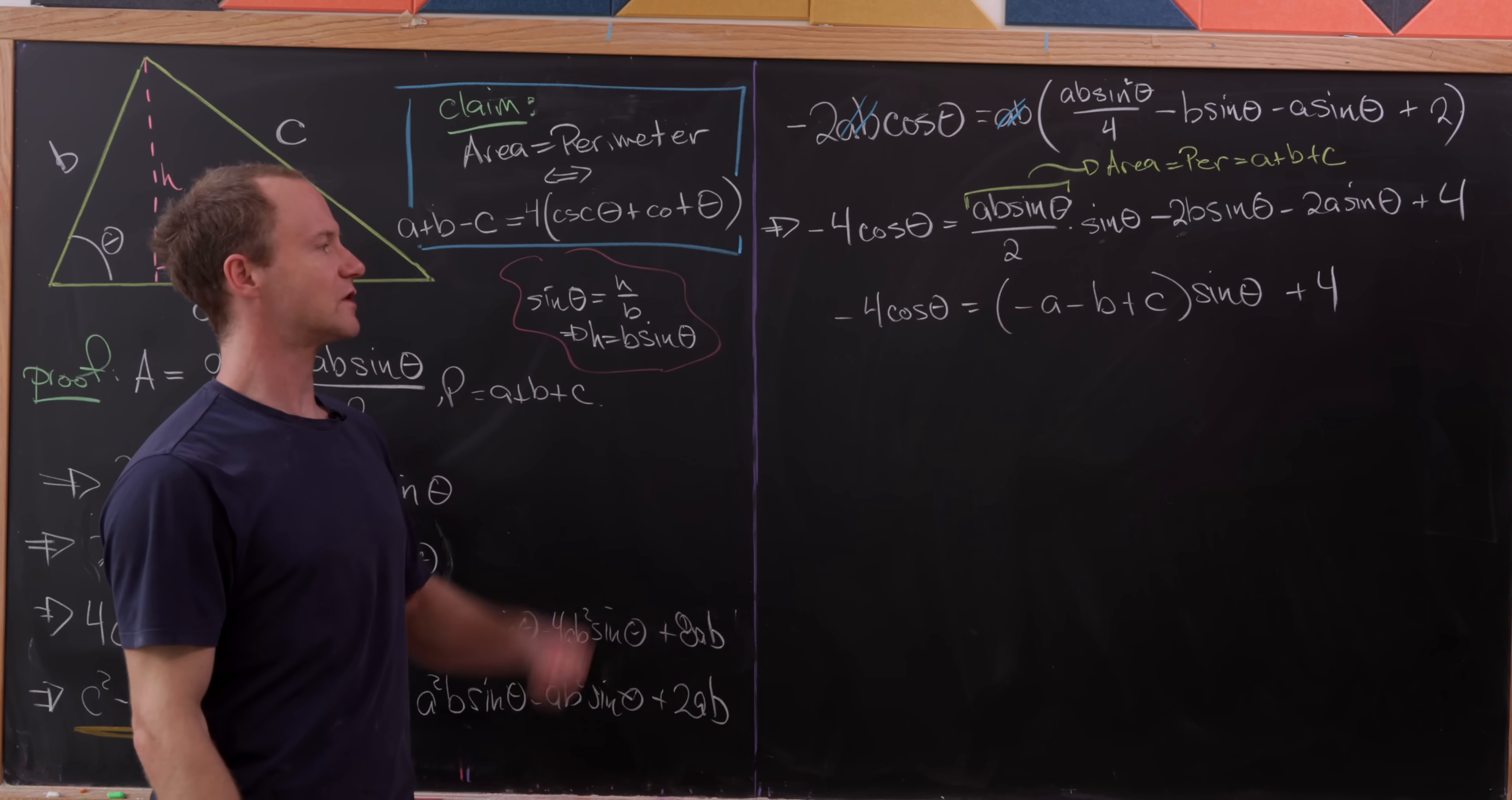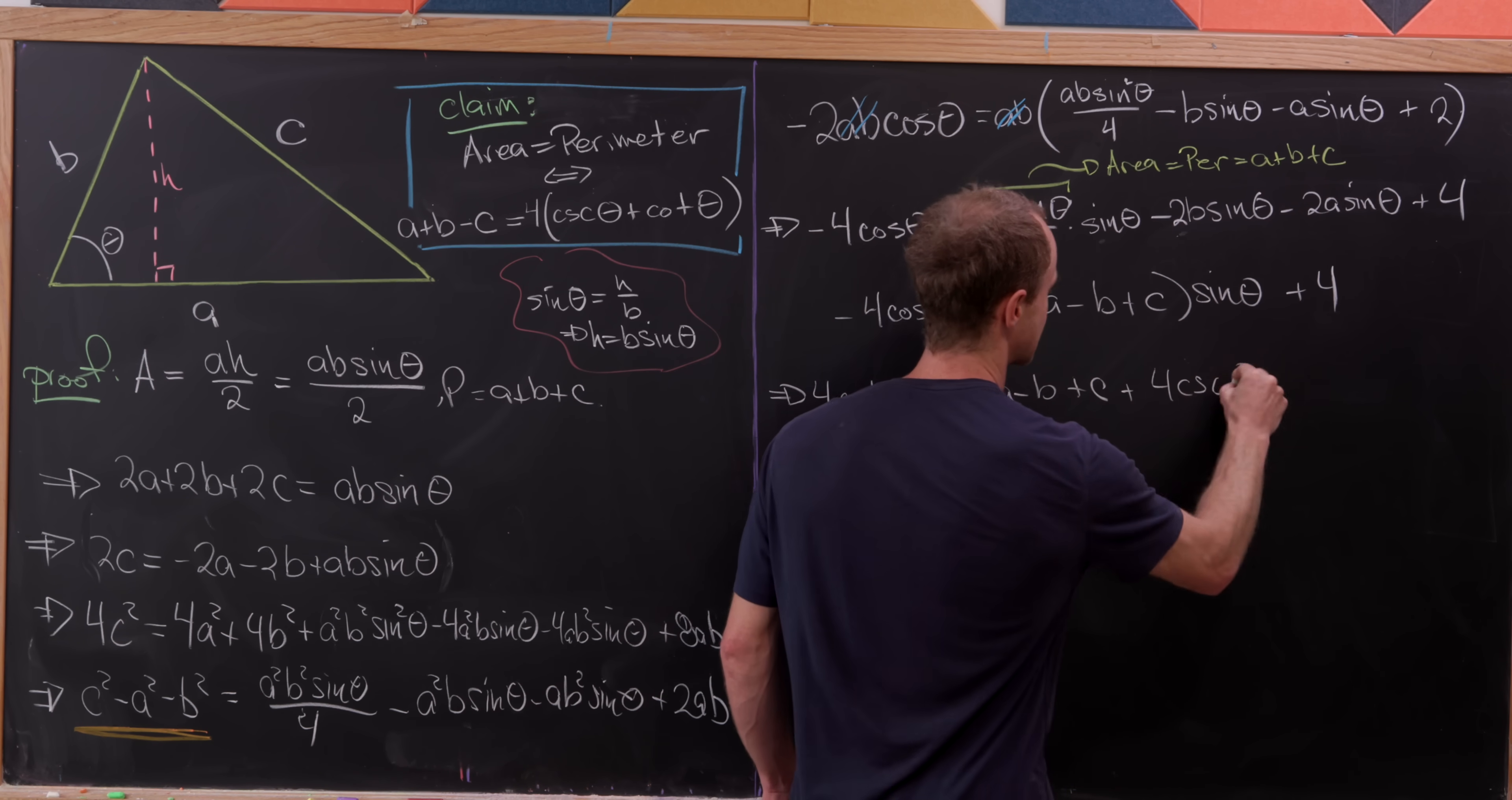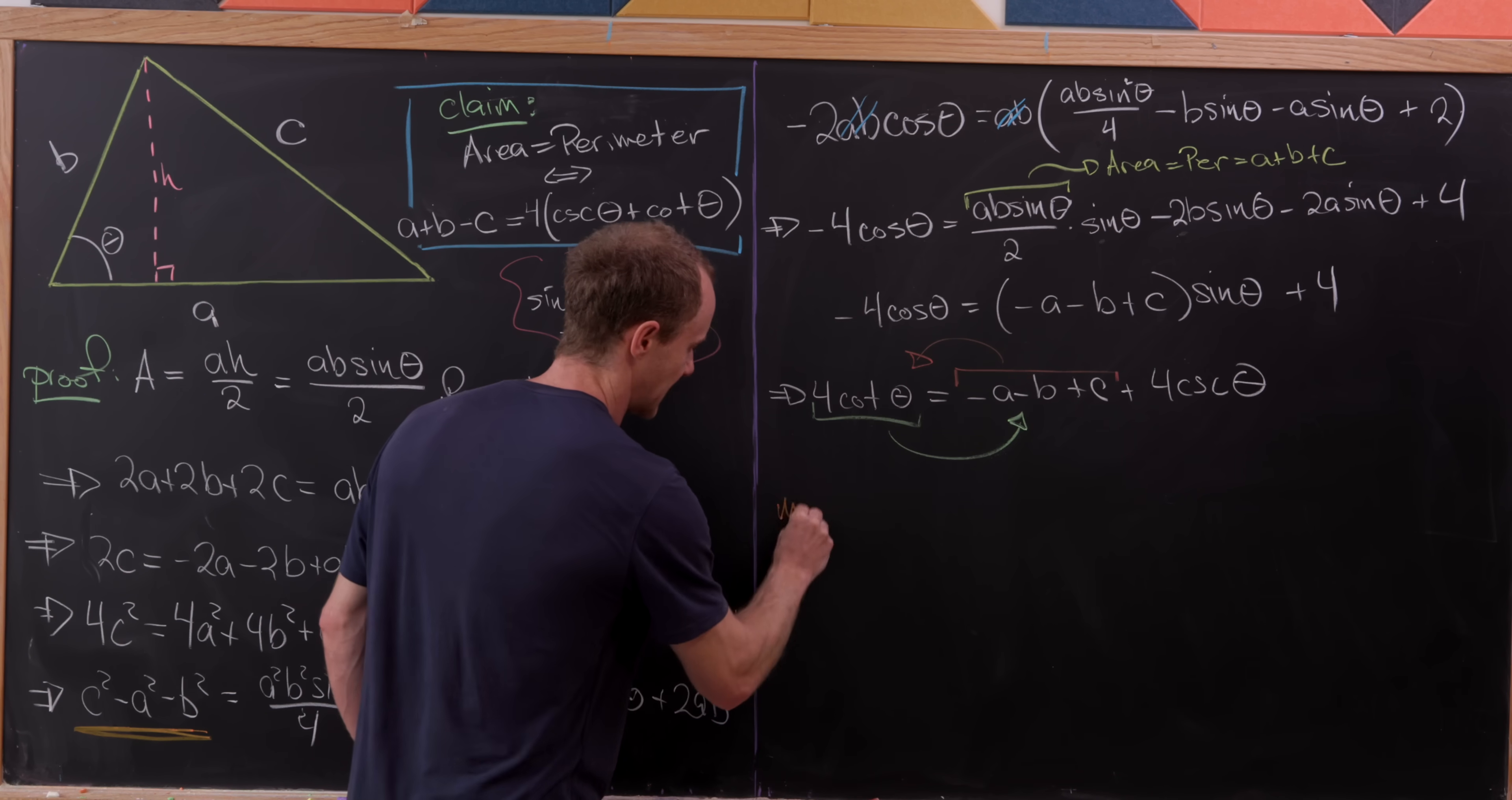But now we're pretty close to our final formula. Let's divide everything by sine, and that's going to give us 4 cotangent theta over here on the left. And then we'll have minus a minus b plus c over here on the right, and then plus 4 cosecant theta. But now we'll do the final step, which will be to take this minus a minus b plus c, move it over to the left-hand side of this equation, and take the 4 cotangent and move it over to the right-hand side of this equation.